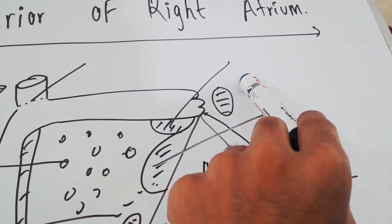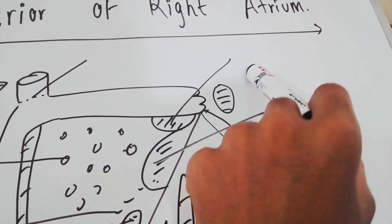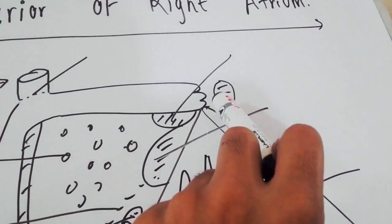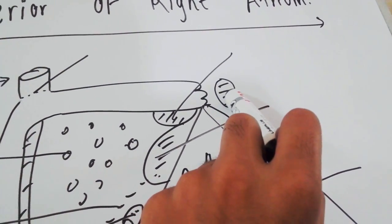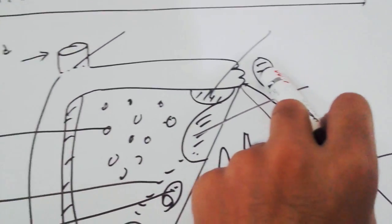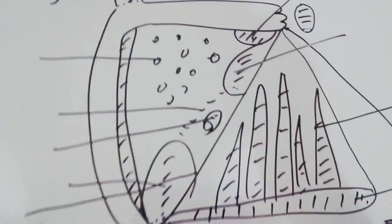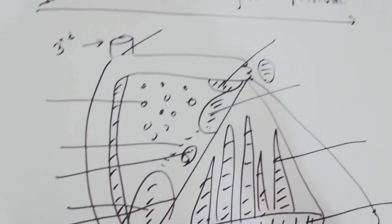This is the torus aorticus and this one is the left auricle. So this is the overview.